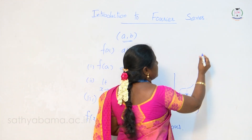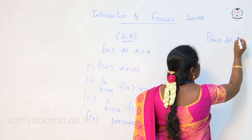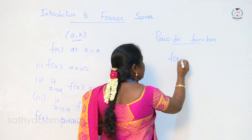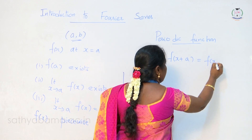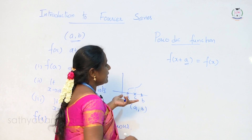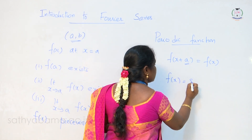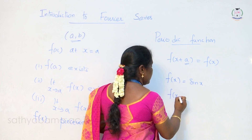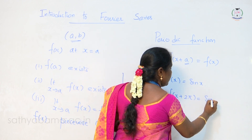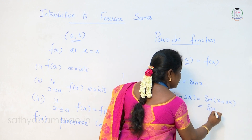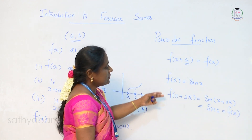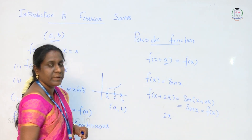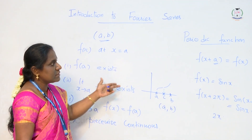The next concept we need is the periodic function. A function f(x) is said to be a periodic function if f(x + a) = f(x), where a is a positive constant. As an example, take f(x) = sin x. Sin x is a periodic function with period 2π, since f(x + 2π) = sin(x + 2π) = sin x = f(x). Hence sin x and cos x are periodic functions with period 2π, and tan x and cot x are periodic functions with period π.